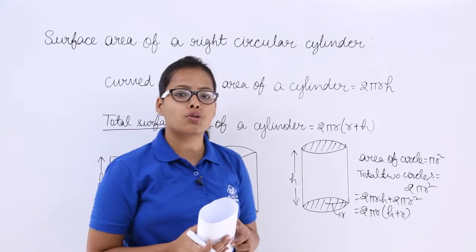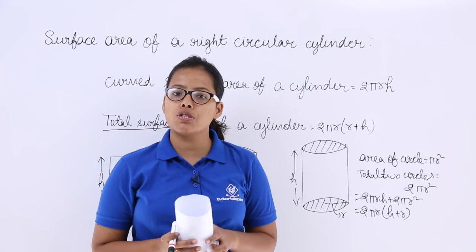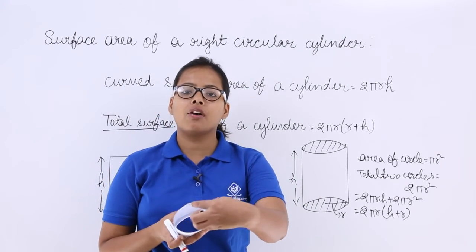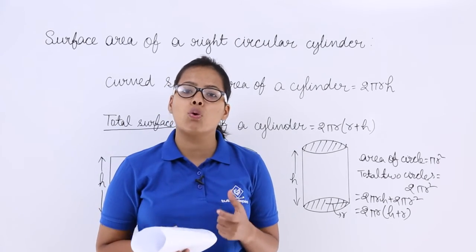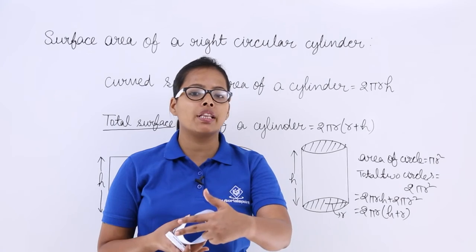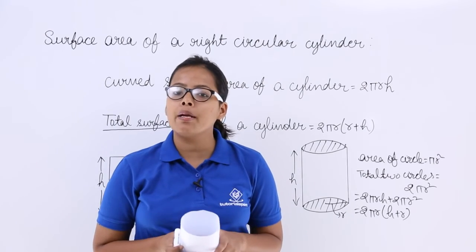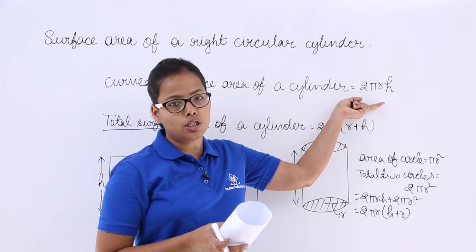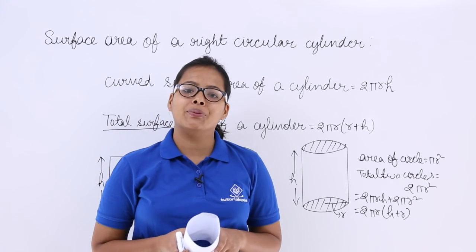I hope you understood this quite well. When I am talking about a hollow cylinder, I am not covering the top and bottom. When I am talking about total cylindrical surface area, then I am including the caps. I will be taking problems based on both formulas in the next video lecture. Thank you.